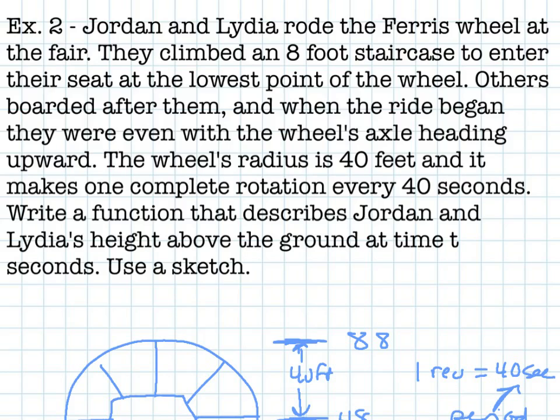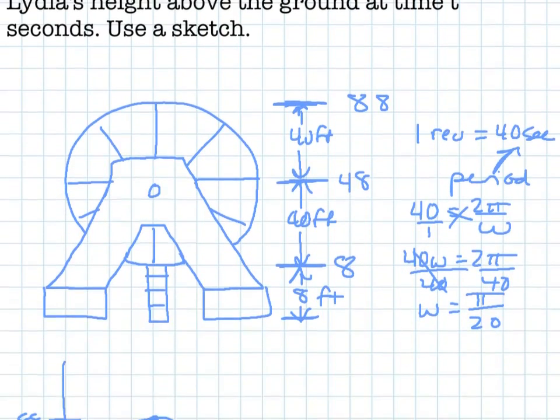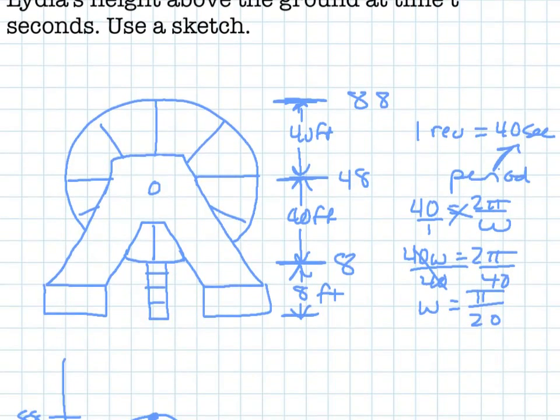The wheel's radius is 40 feet, and it makes one complete rotation every 40 seconds. Write a function that describes Jordan and Lydia's height above the ground at time t seconds. Use a sketch. So here, I first drew my picture of my Ferris wheel.